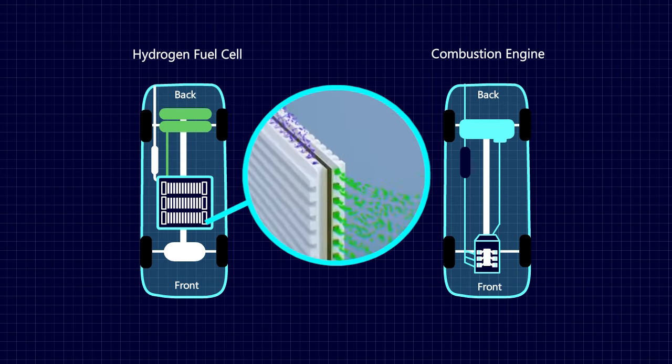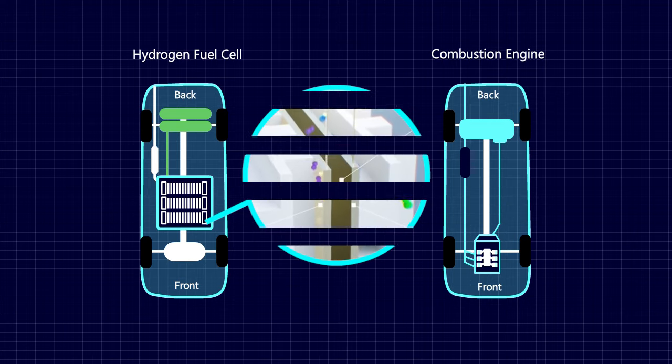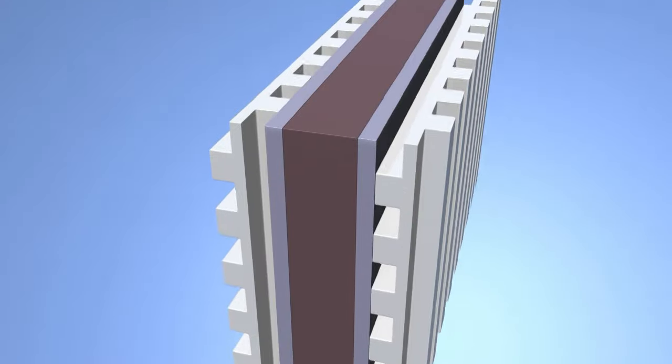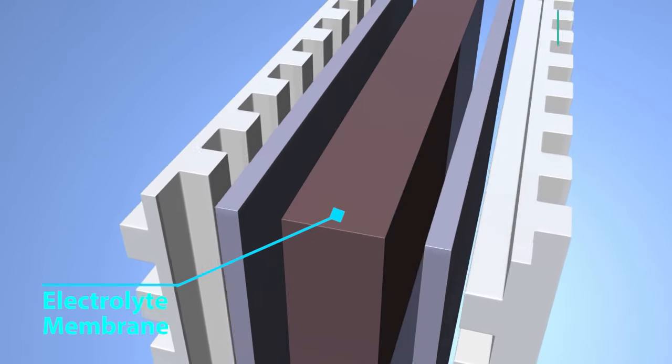They can convert the chemical energy in the fuel to electrical energy. A fuel cell is composed of two plates separated by an electrolyte membrane.